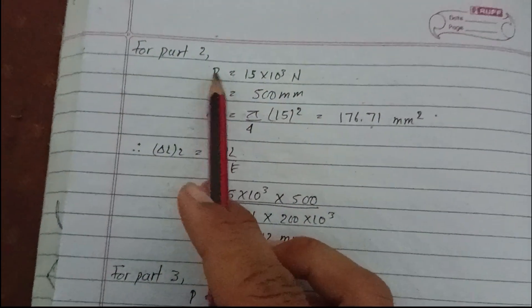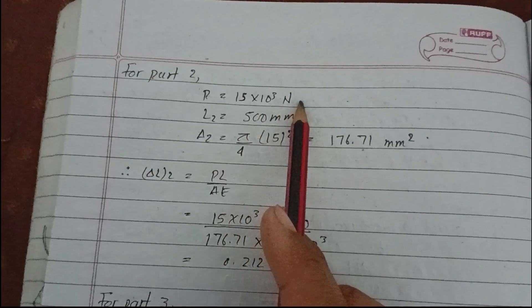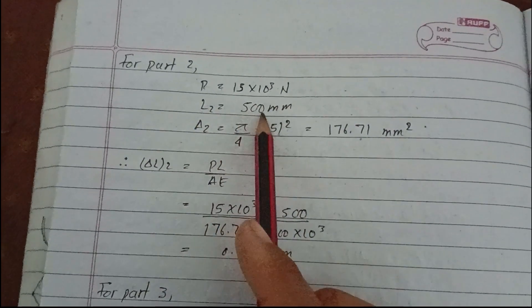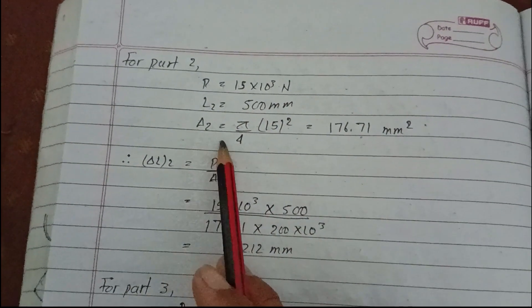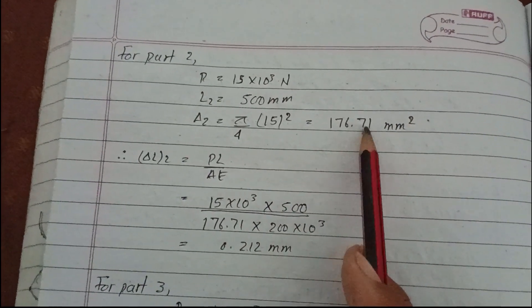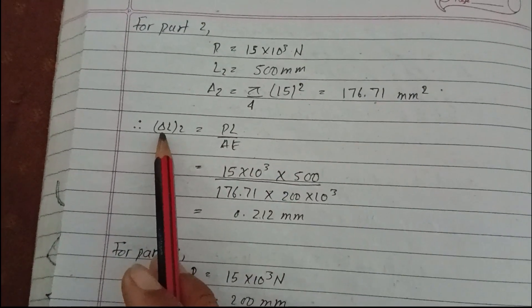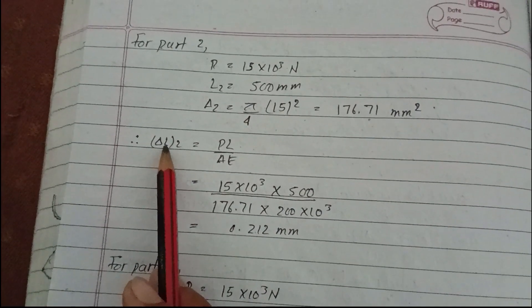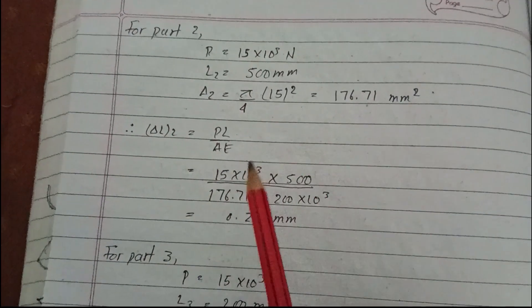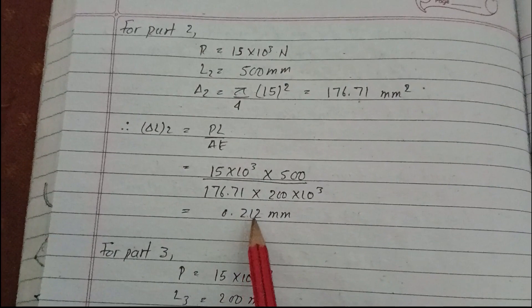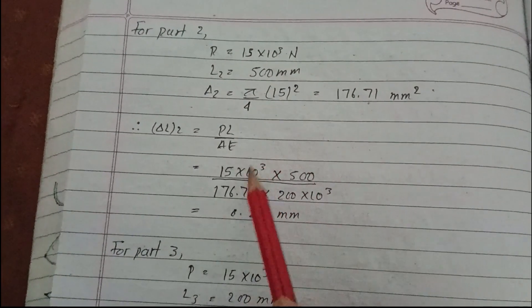For part two: The peak value is the same, 15×10³ Newton. L2 is 500 mm. A2 equals π/4 × (15)² equals 176.71 mm². The elongation in part two, ΔL2, is 0.212 mm.